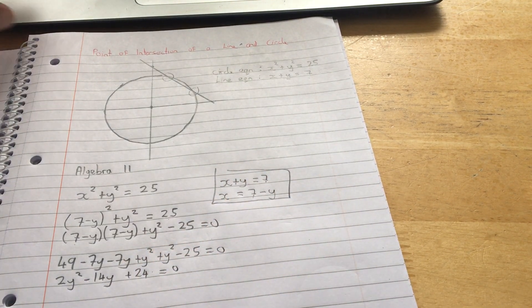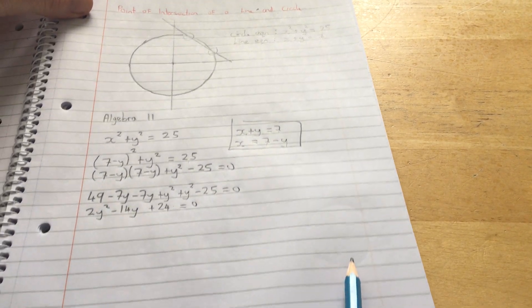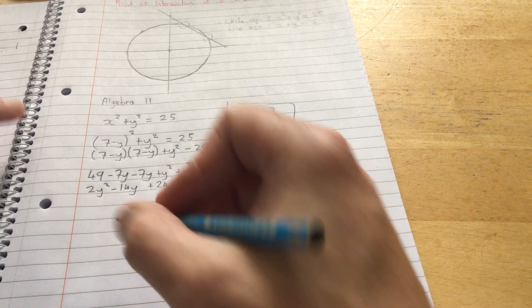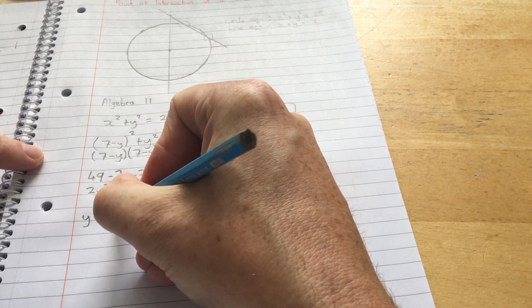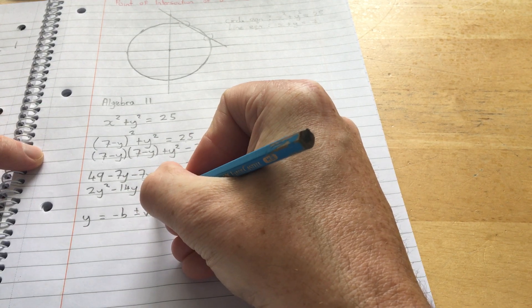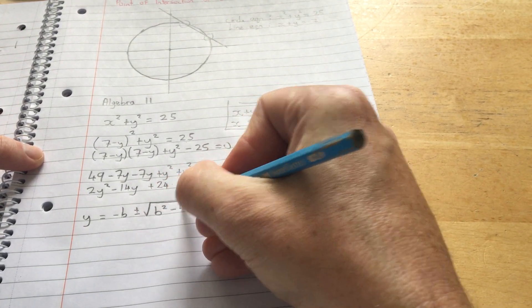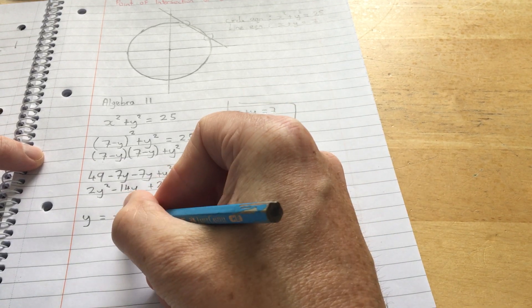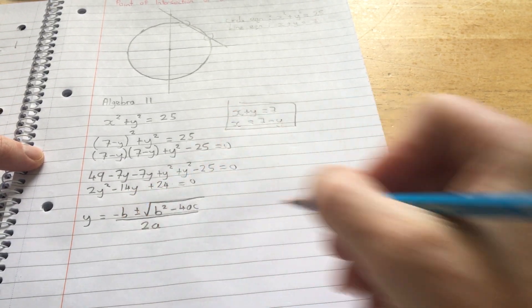I've got a quadratic equation here because I've got a squared term, a y term, and a number term. I'm going to use the minus b rule to find y. So y equals minus b plus or minus the square root of b squared minus 4ac. This, again, is from your algebra chapter. And it's from your junior cert as well. So there shouldn't be any bother with this.